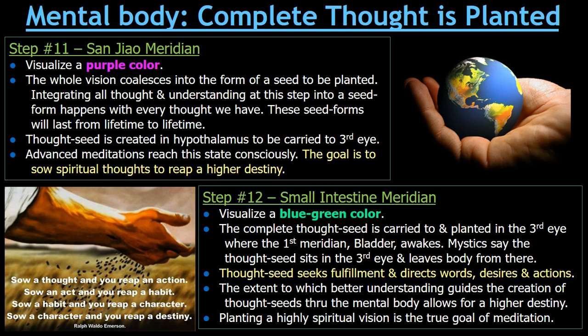These seed forms will last from lifetime to lifetime — they sit in our subconscious and wait to be manifested. Many of them control our actions; they control how we think, how we eat, how we talk, how we respond to other people. All these thought processes become seed forms that sit within our subconscious. These thought seeds are created in the hypothalamus to be carried to the third eye. Advanced meditations reach this state consciously. The goal is to sow spiritual thoughts to reap a higher destiny.